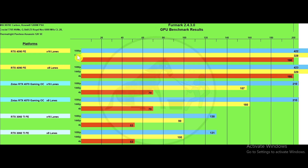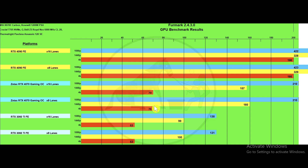Furmark 2.4.3.0 benchmarks at 1080p, 1440p, and 4K. The 4090: 422 vs. 423 at 1080p; 328 vs. 329 at 1440p; 196 both at 4K. The 4070: 210 both at 1080p; 157 vs. 160 at 1440p; 70 both at 4K. The 3060 Ti: 130 vs. 131 at 1080p; 99 vs. 100 at 1440p; 53 both at 4K.